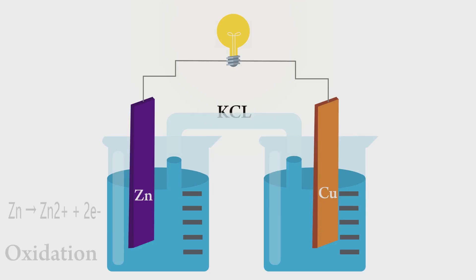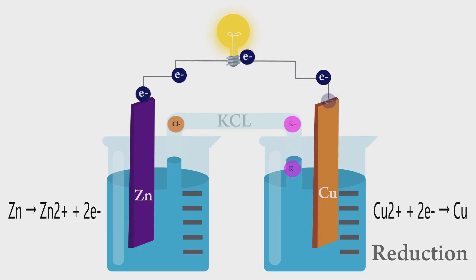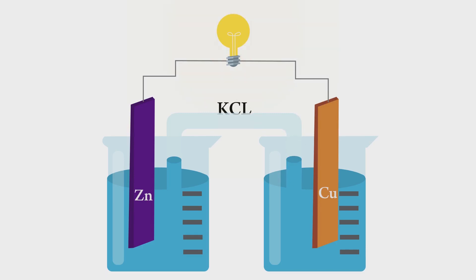The anode is the electrode where oxidation takes place. In a galvanic cell, it is the negative electrode because when oxidation occurs, electrons are left behind on the electrode. These electrons then flow through the external wire to the cathode.